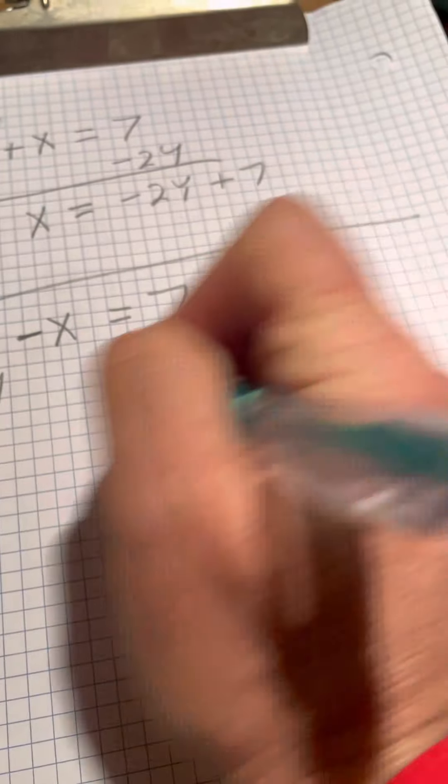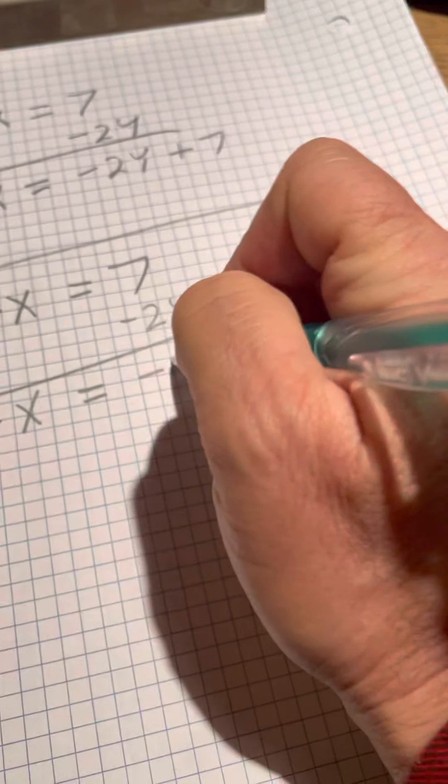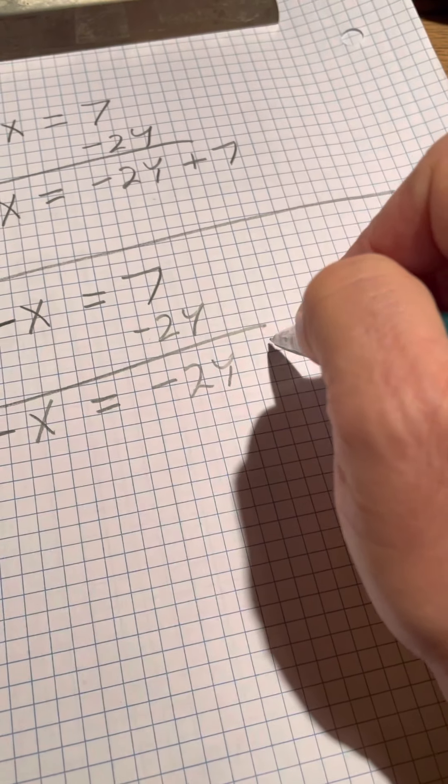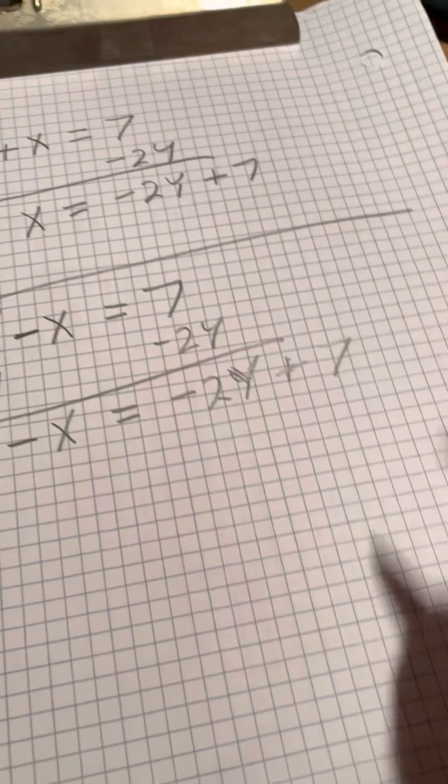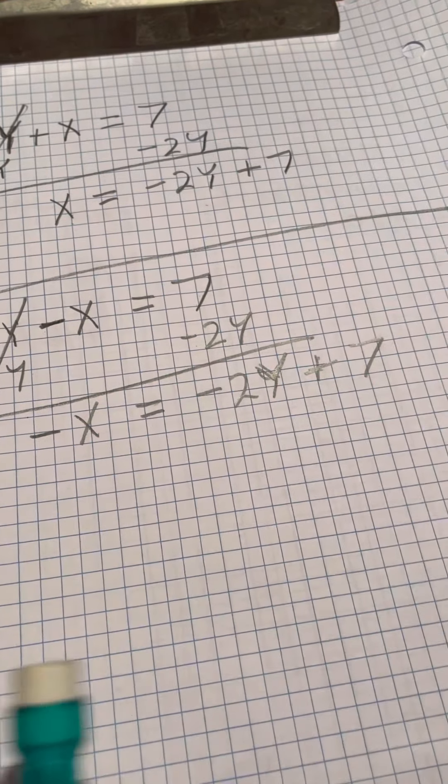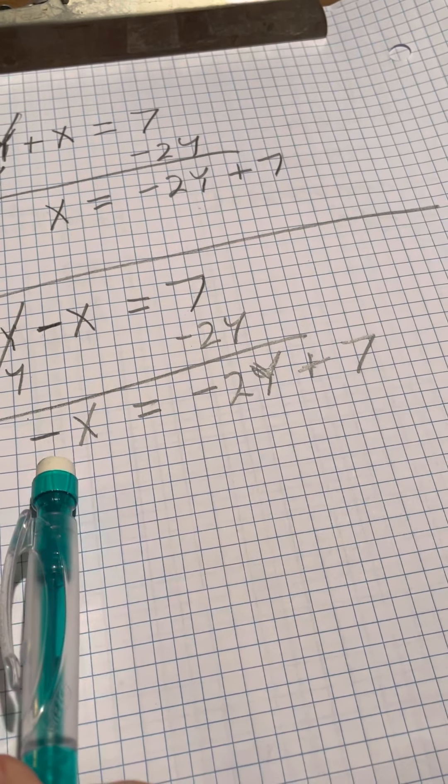You'll subtract 2y from both sides, those will cancel out, and you'll be left with negative x equals negative 2y plus 7. Is that x equals? No, because we have that negative. We want to say just x equals.